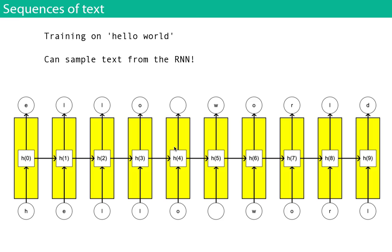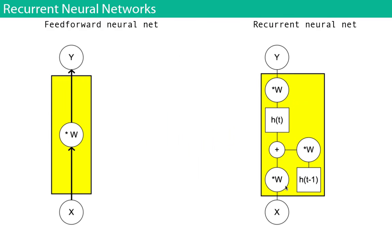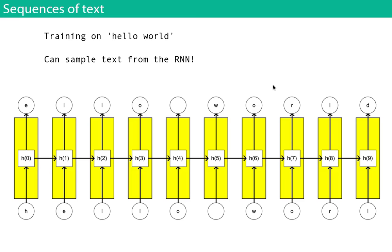The most familiar example is training on text to generate text that looks like it came from the training corpus. Suppose we have the text 'hello world.' We set up the RNN by taking the characters in order and setting the targets — the Y vectors — to be the next character in the sequence: H to E, E to L, L to L, L to O, and so on. We train as normal, treating these as samples, optimizing the weight vectors to accurately predict the next character.